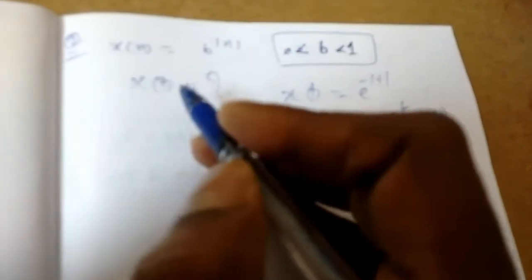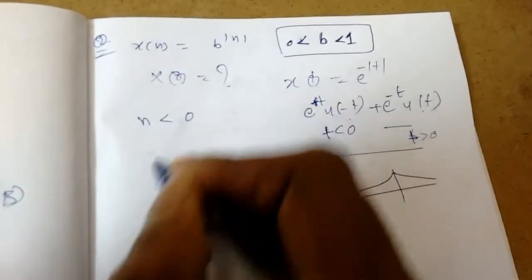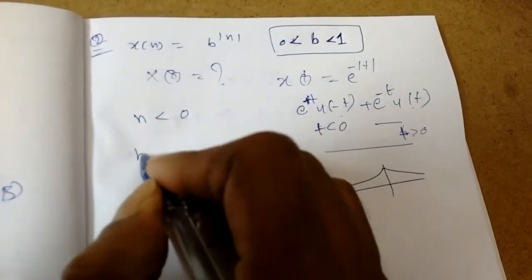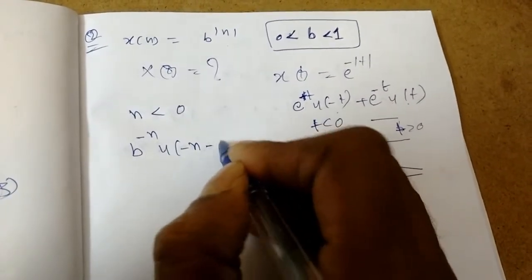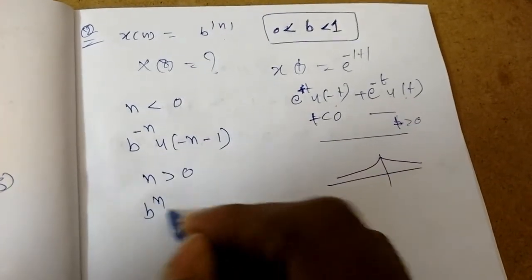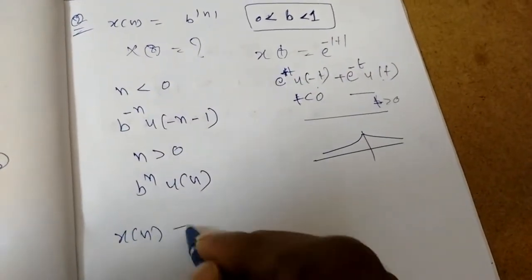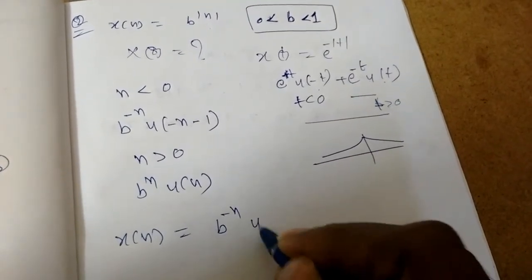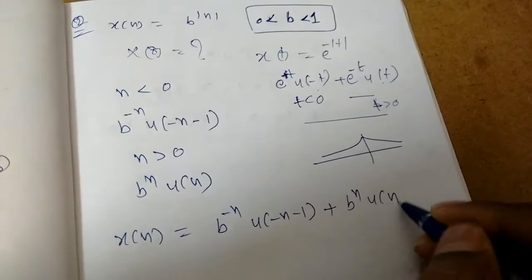Similarly, for the discrete time signal, that is b power mod n: for n less than 0, it will become b power minus n into u of minus n minus 1. For n greater than 0, it is b power n into u of n. So x of n equals b power minus n times u of minus n minus 1, plus b power n times u of n.